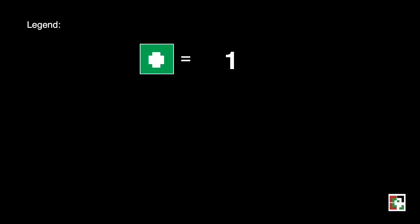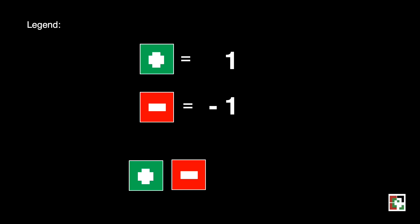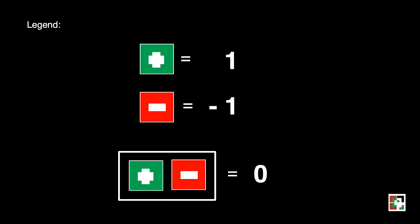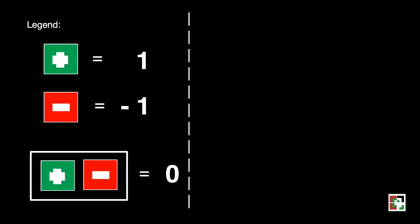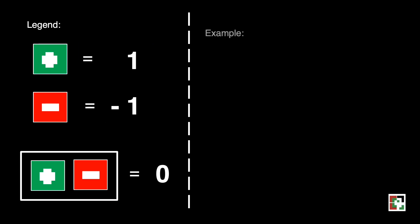Before we solve any problems involving addition of integers, we have to take note of the following. 1 green square is equivalent to 1, while 1 red square is equivalent to negative 1. When we have a pair of 1 green square and 1 red square, that is equivalent to 0, or we call it a 0 pair. Please remember that because we need that in our examples.